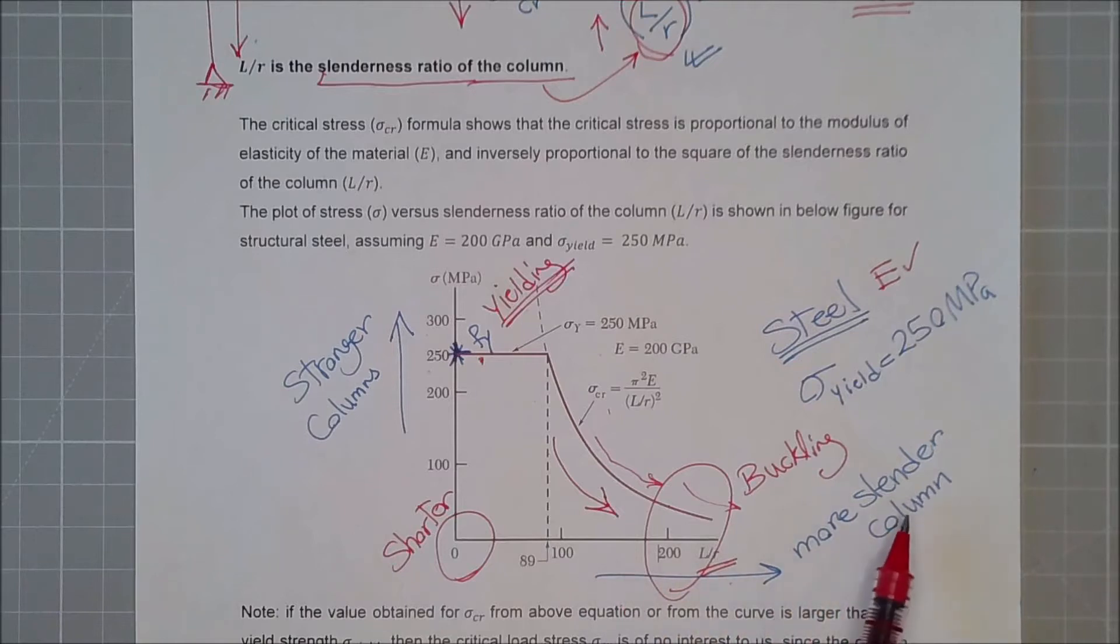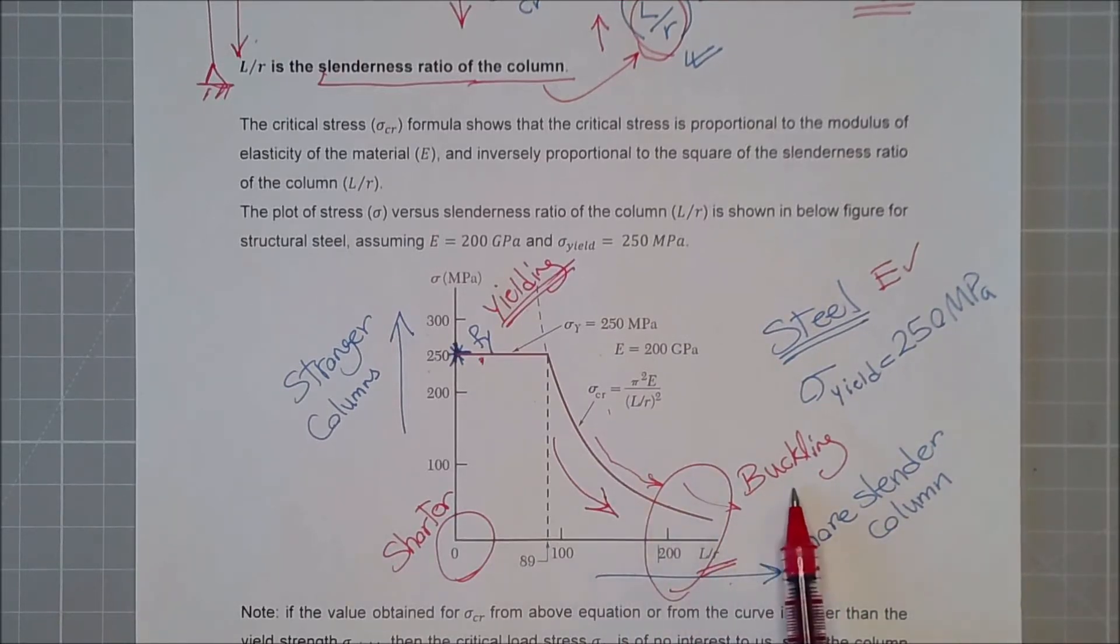The more slender your column is, highly susceptible to buckling, and probably the failure will happen due to that buckling.